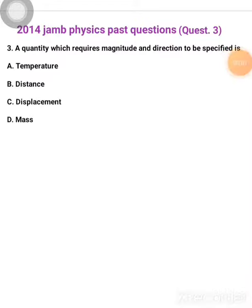This is your 2014 JAMB physics past question number 3. Number 3 says: a quantity which requires magnitude and direction to be specified is option A, temperature, B, distance, C, displacement, and D, mass.